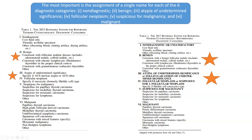Category five is suspicious for malignancy — for papillary thyroid, medullary thyroid, metastatic lymphoma, and others. Category six is malignant, which includes papillary thyroid cancer and high-grade follicular-derived carcinoma. This is a transition from the previous name 'poorly differentiated carcinoma.' Medullary thyroid carcinoma, anaplastic carcinoma, squamous cell carcinoma, carcinoma with mixed features, metastatic, and non-Hodgkin's lymphoma all remain the same. The key change is high-grade follicular-derived carcinoma replacing poorly differentiated carcinoma from 2017.